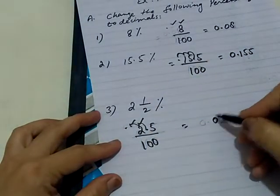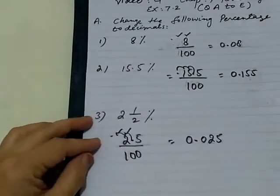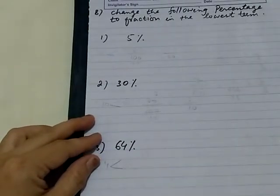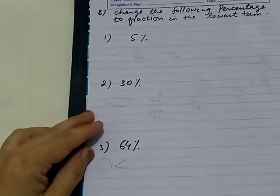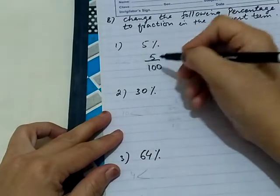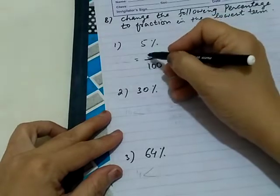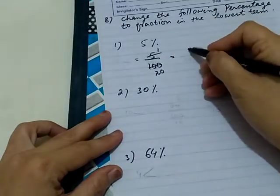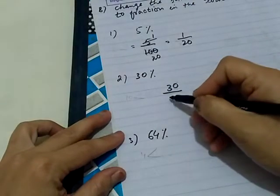Question B: Change the following percentage to a fraction in the lowest term. Number one: 5 percent means 5 upon 100. Simplifying with 5: 5 divided by 5 is 1, and 100 divided by 5 is 20, so the answer is 1 upon 20. 30 percent means 30 upon 100.